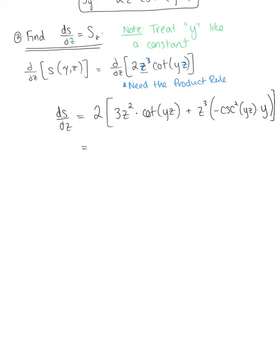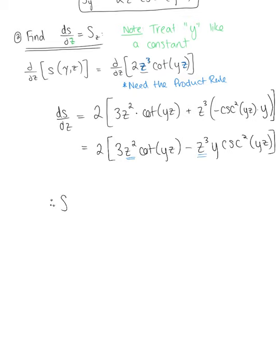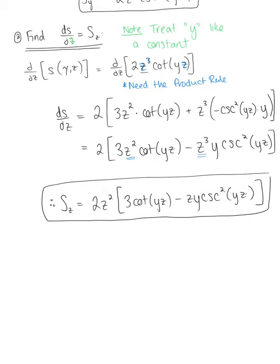Let's rewrite this to make it look nice: 2 multiplied by 3z squared times cotangent of yz minus z cubed times y times cosecant squared of yz. We could simplify a little further — we see we have a greatest common factor of z squared. So the derivative of s with respect to z is 2z squared multiplied by the quantity 3 times cotangent of yz minus zy times cosecant squared of yz. And those are our two first-order partial derivatives.